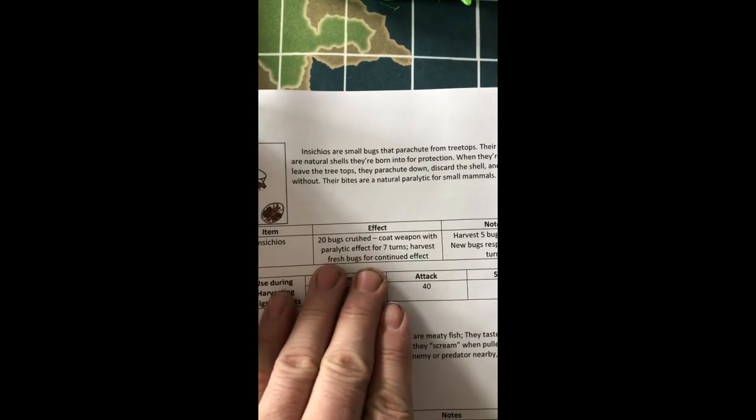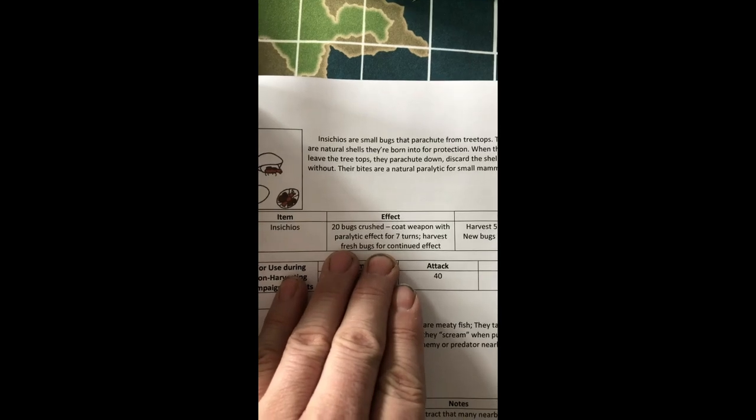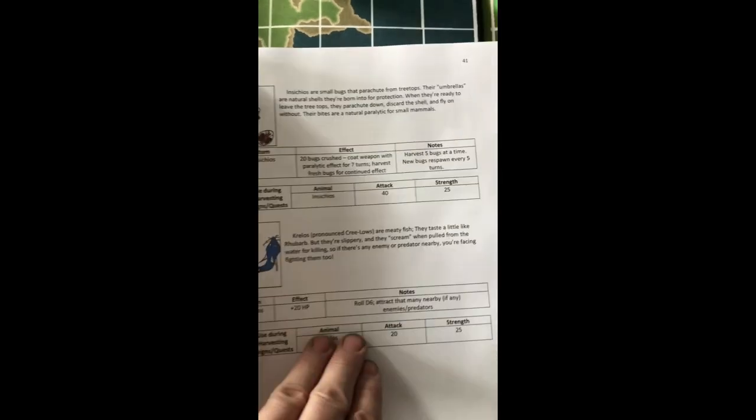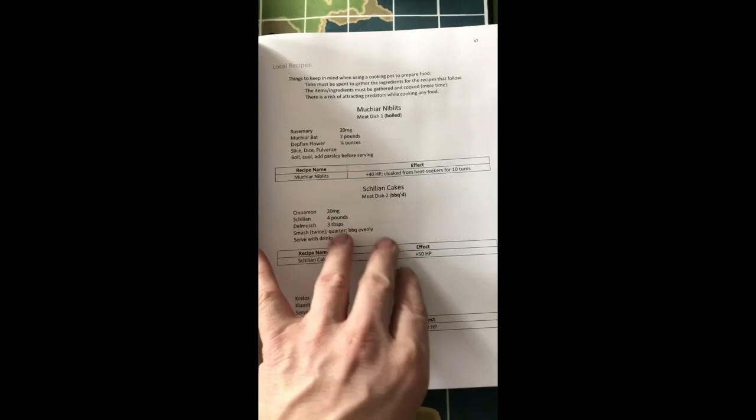20 bugs crushed. Coat weapon with paralytic effect for 7 turns. Harvest fresh bugs for continued effect. It's only good for so long. Then you got to go kill more bugs. And this goes through every race. There's an Ashtaran from the planet Ashtar.